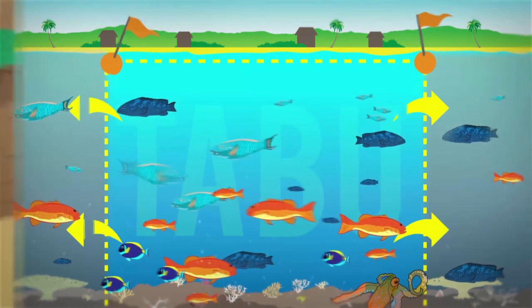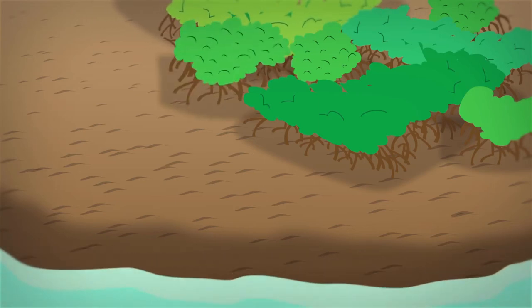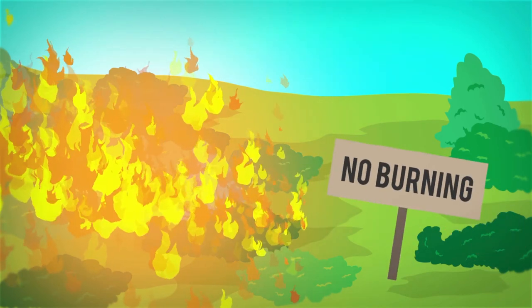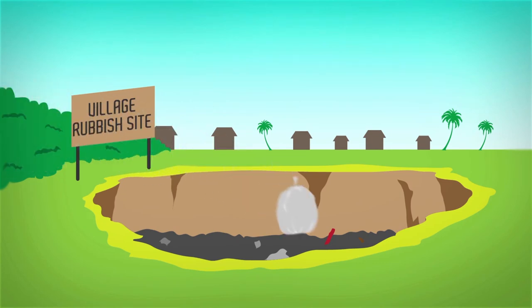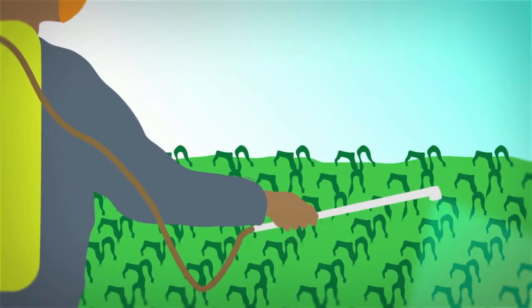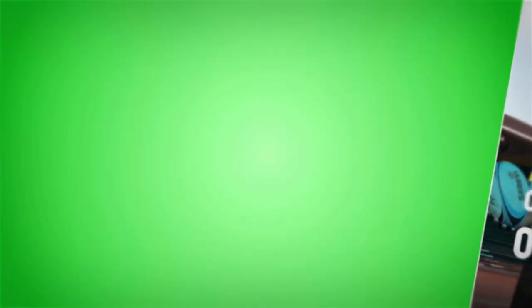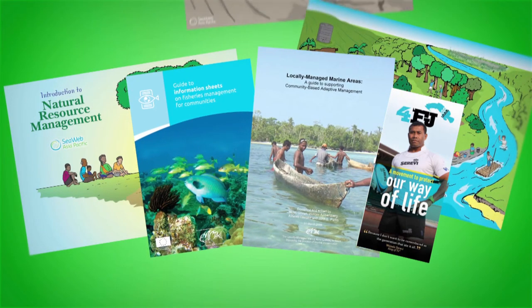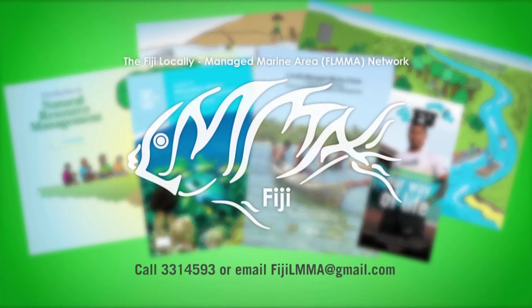Some villages have also established rules for land use like banning or limiting mangrove clearing to preserve important habitat or banning burning as it causes too much sediment to run off the land into the sea which smothers reefs. Places have also taken simple steps like making sure all their garbage does not end up on the reef or limiting the use of herbicides or fertilizers that can run off onto reefs and kill coral. There are awareness materials available and also government agencies and NGOs that might be able to help. Visit your provincial office or contact the Fiji Locally Managed Marine Area Network to learn more.